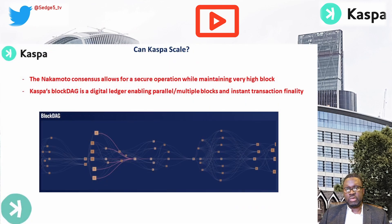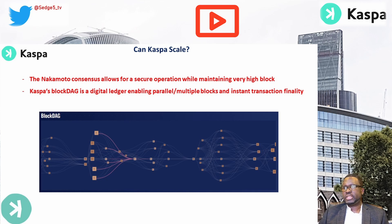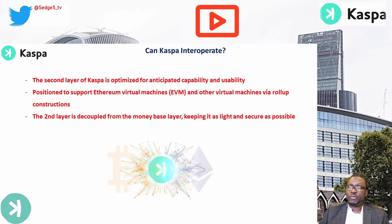On scalability: the generalization of the Nakamoto consensus allows for secure operation while maintaining a very high block rate — currently one block per second, with a long-term aim of 100 blocks per second. Casper's blockDAG is a digital ledger enabling parallel or multiple blocks and instant transaction finality.